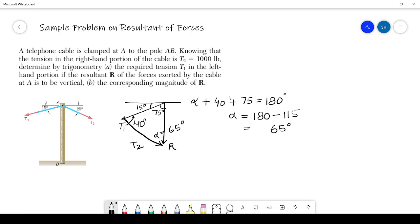Now we can use the sine law to calculate the unknown forces. So T1 upon sine of 65 degrees should be equals to T2 upon sine of 75 degrees. So from this you can calculate T1.